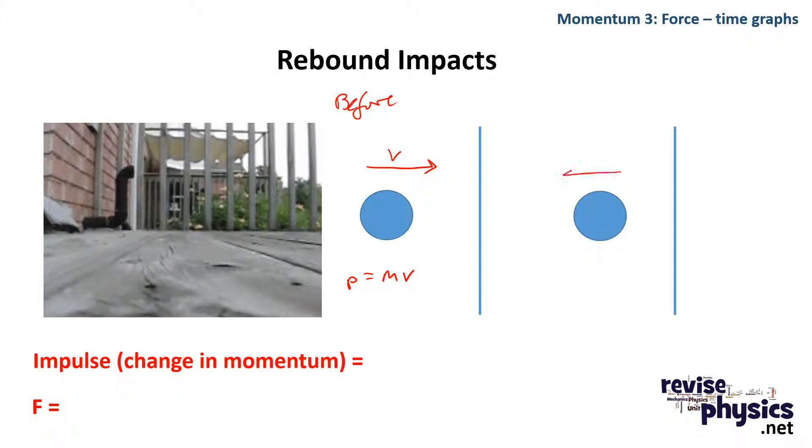Once it's rebounded, it's moving in the opposite direction, so it has a velocity of minus v. And assuming that no energy has been lost, we can say that its momentum is equal to minus mv. That means that my change in momentum for a rebound is minus mv minus the initial, which was mv, which is equal to minus 2mv.